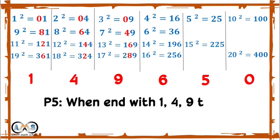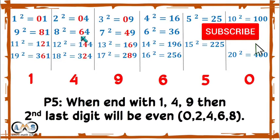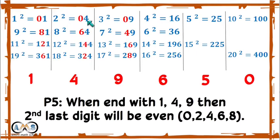When a perfect square number ends with 1, 4, or 9, the second last digit will be an even number, including 0.